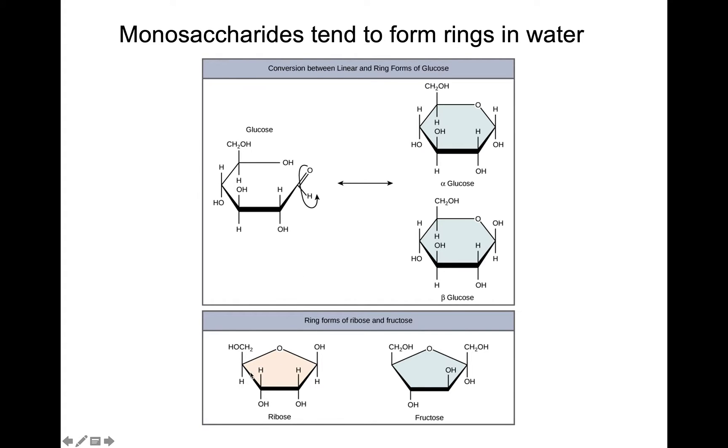Same thing here with ribose. You see these corners so we got one, two, three, four, five. So ribose is a five carbon sugar. Let's see fructose one, two, three, four, five, six. Fructose is a six carbon carbohydrate.